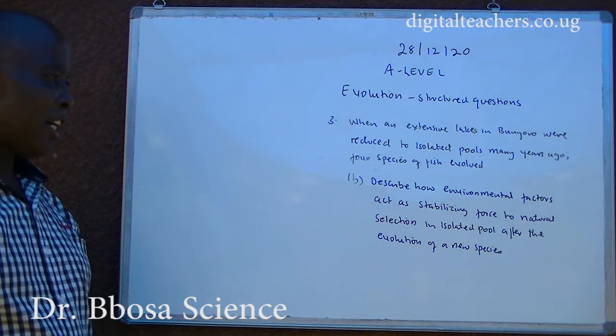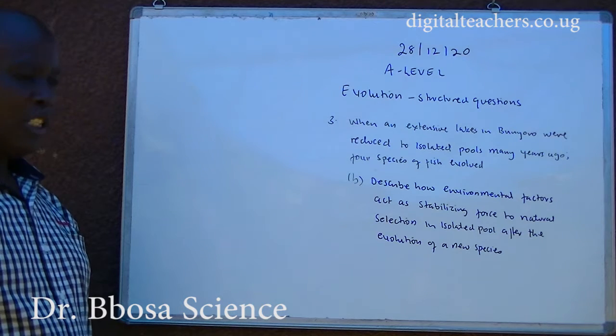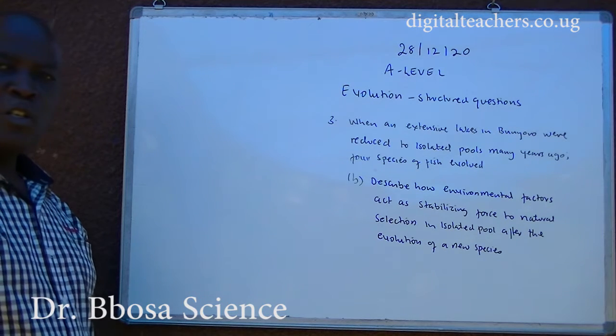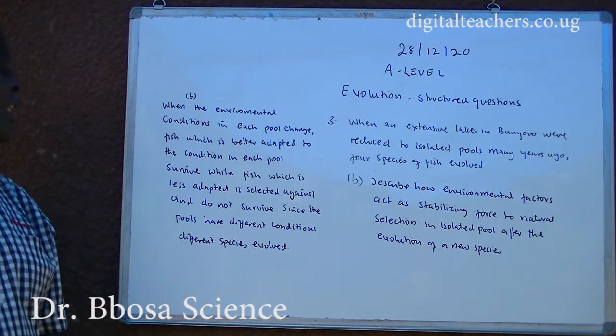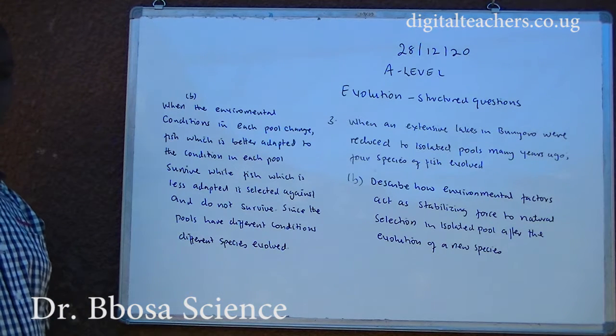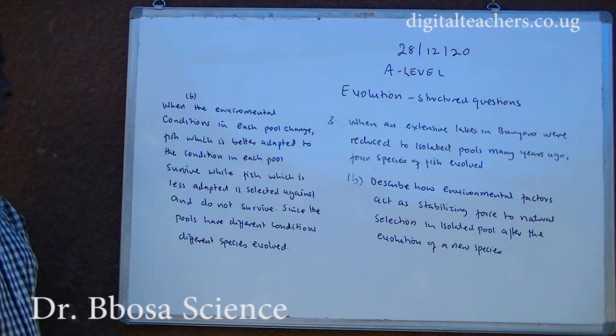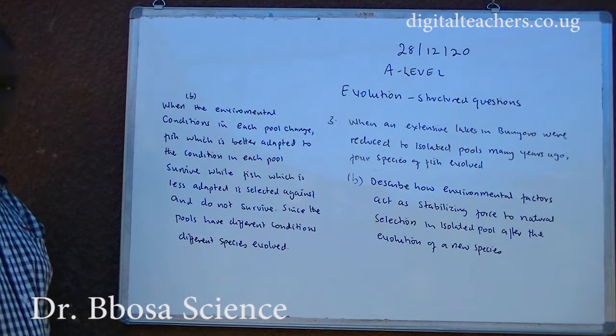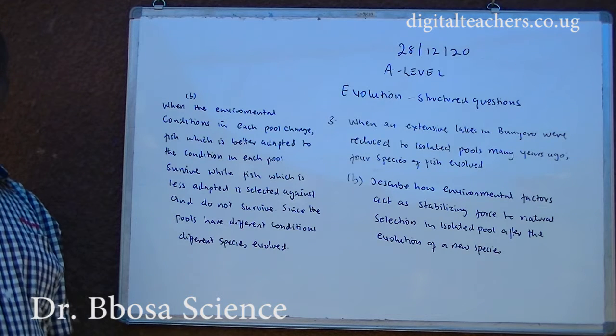B. Describe how environmental factors act as stabilizing force to natural selection in isolated pools after evolution of a new species. You can pause and answer. When the environmental conditions in each pool change, fish which are better adapted to the condition in each pool survive, while fish which are less adapted are selected against and do not survive. Since pools have different conditions, different species evolved.